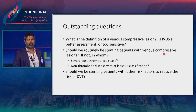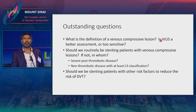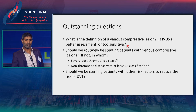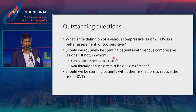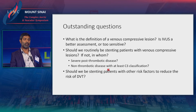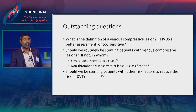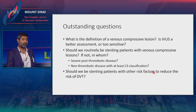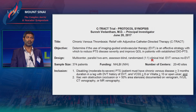The outstanding questions for these venous compression lesions: what is the definition of a venous compression lesion? Should we be relying on venography? Should we be relying on IVUS? IVUS, as shown by the VIDEO trial, is more sensitive than venography, but does that mean we should be acting on it? We don't know the answer to that. Should we routinely stent patients with venous compression lesions? If not, in whom? Those with severe post-thrombotic disease, or non-thrombotic disease with at least C3 classification? We have senses of what we want to do, but the data is not yet there. Should we be stenting patients with other risk factors to reduce the risk of DVT? A very provocative question — most of us would say no.